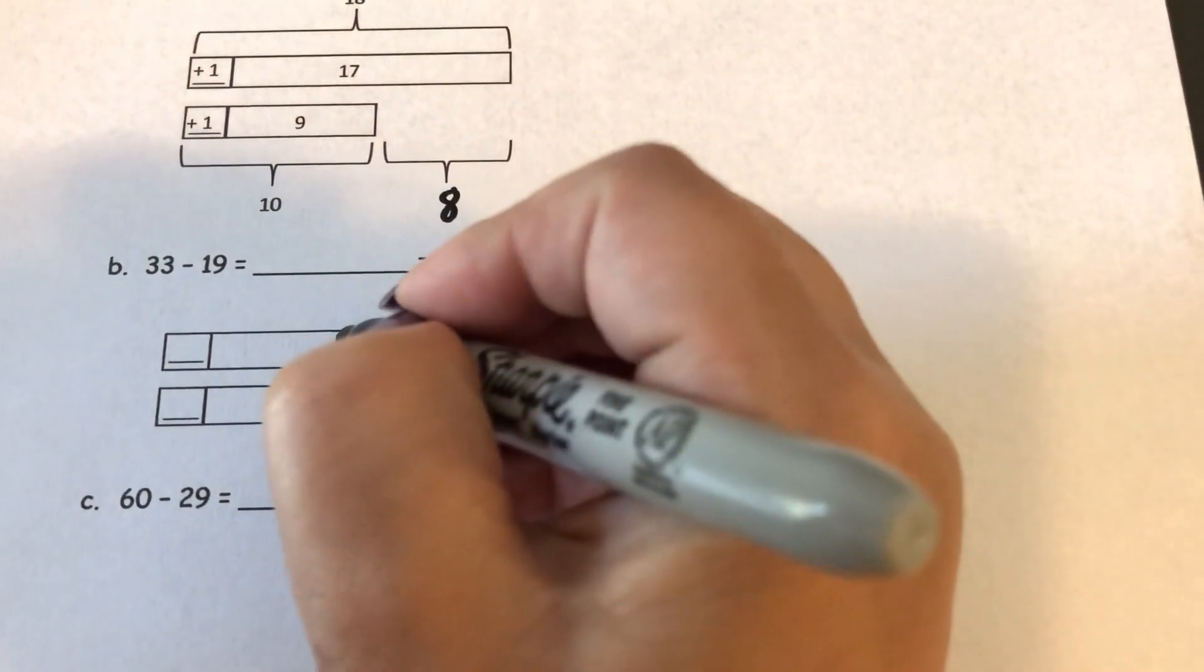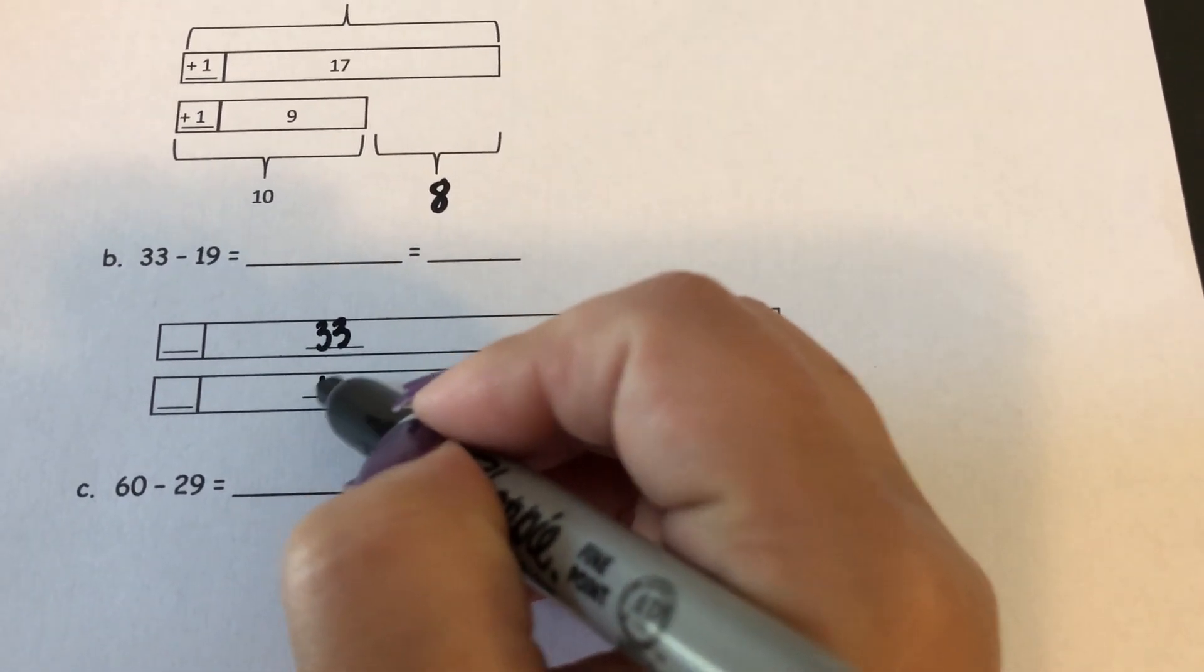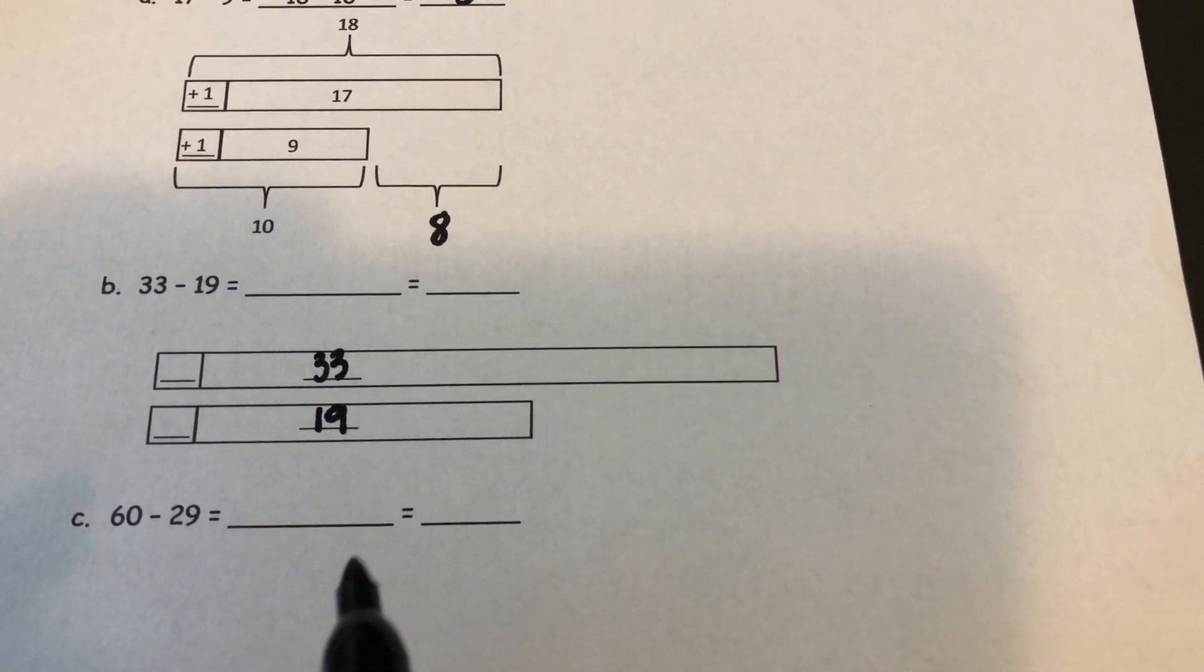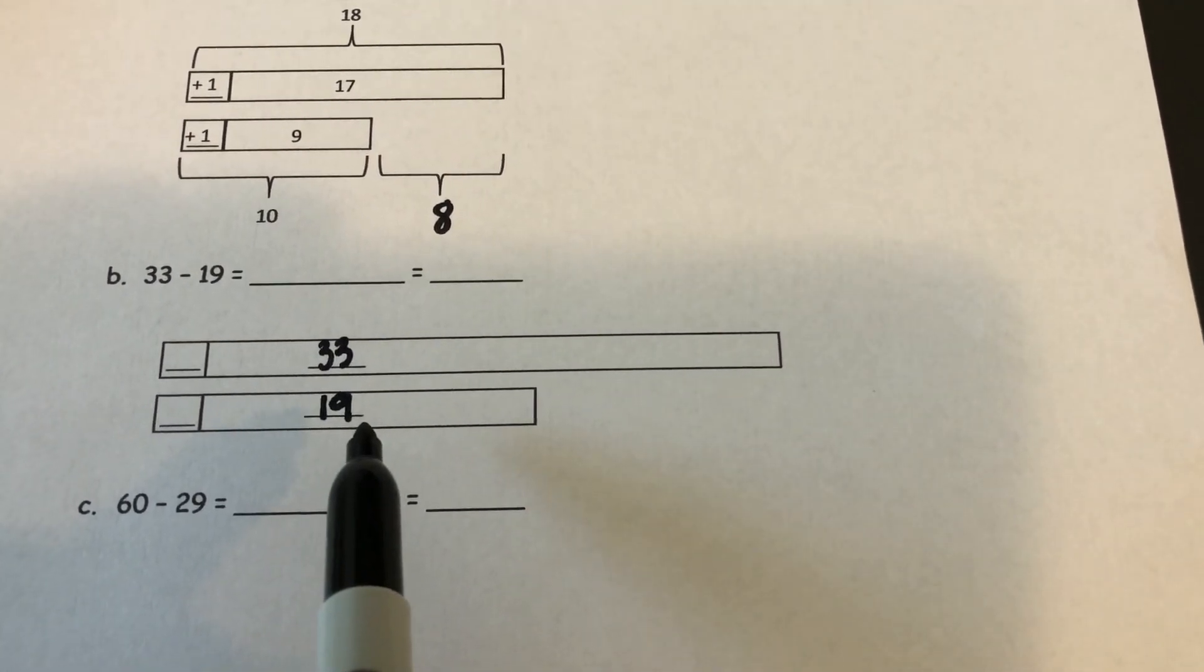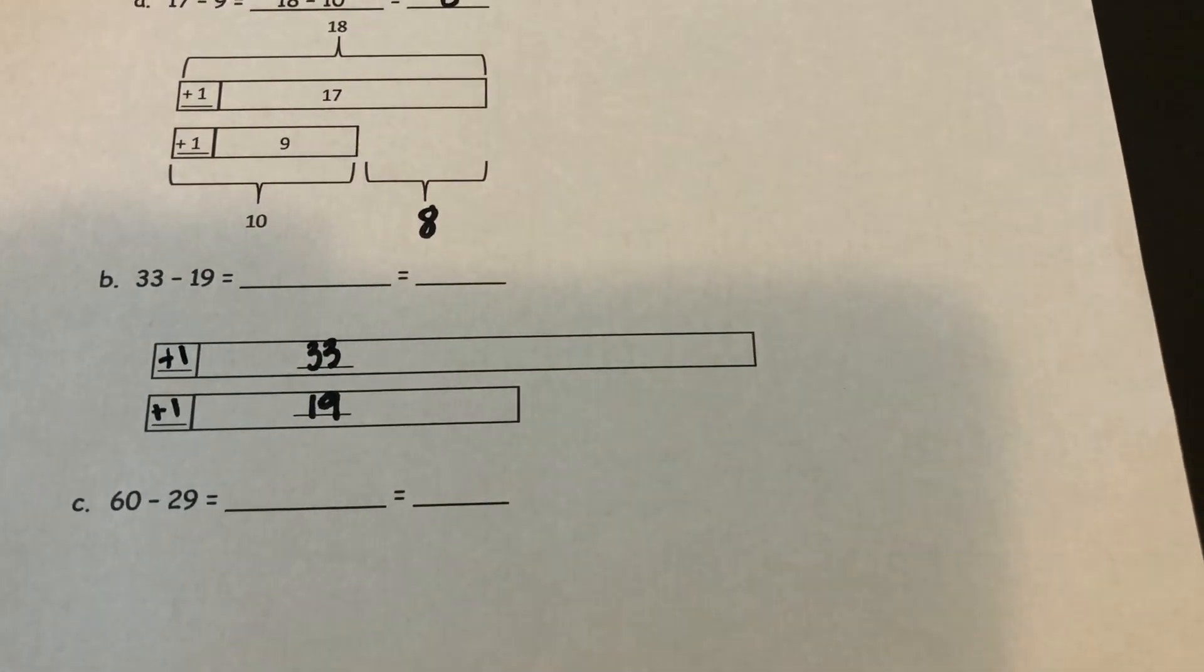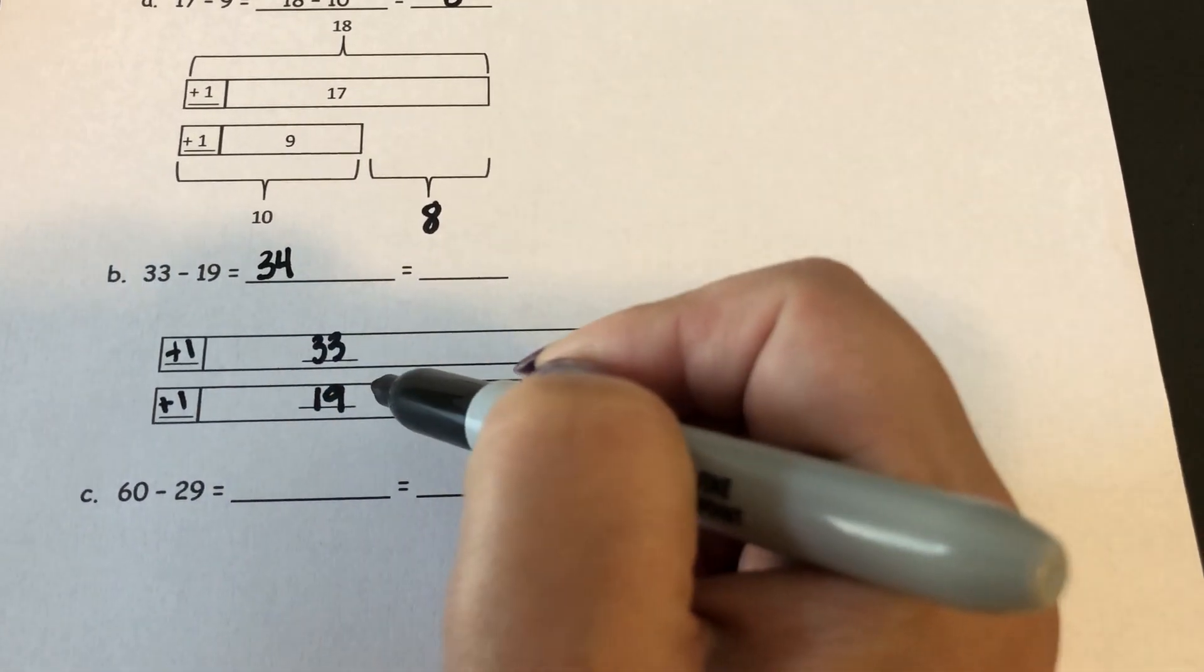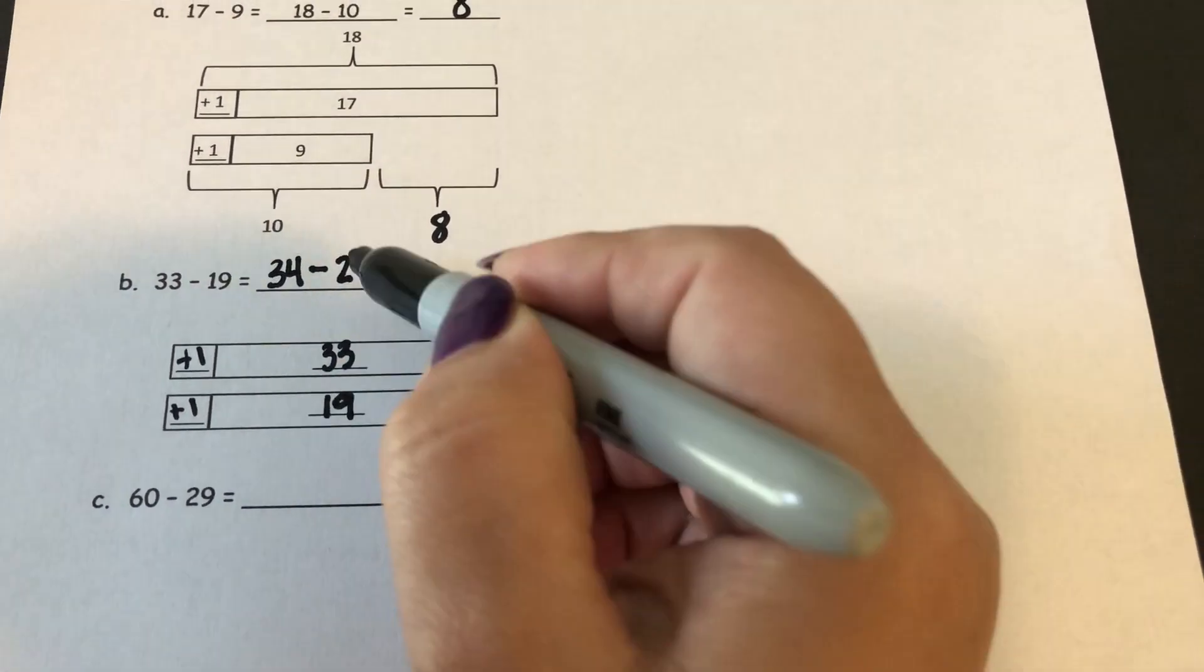So originally it would be 33, and I would subtract 19. But for this strategy, I want to make it a different equation. Well, I know if I add 1 to 19, that would make it a 20, which would be easy to subtract. So if I add 1 to the bottom, I also need to add 1 to the top. So my new equation is now 34, because 33 plus 1 is 34, minus 20, because 19 plus 1 is 20.